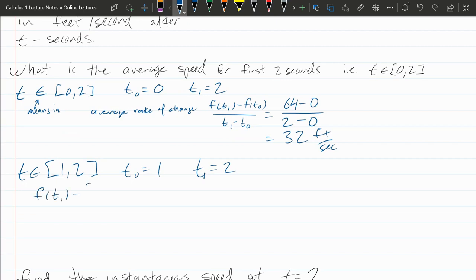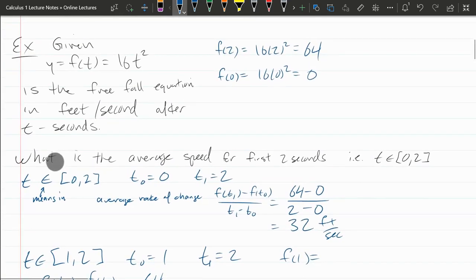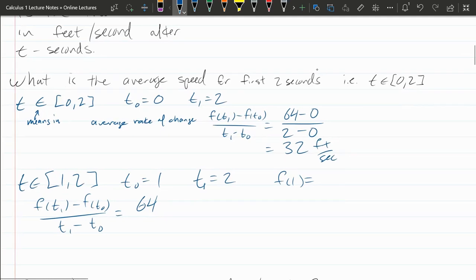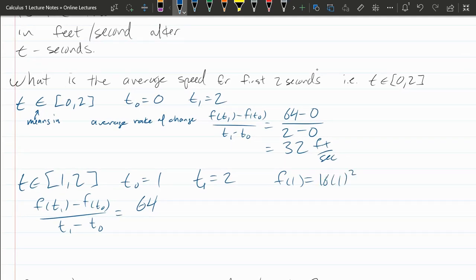f of t1 minus f of t0 divided by t1 minus t0. We computed f of 2 already, and that was 64. What is f of 1? So that function, you might need to re-look at that. 16 times 1 squared. 16 times 1 is 16. Divided by.